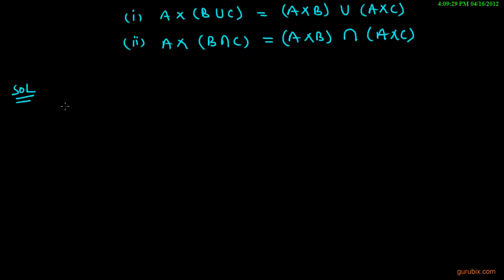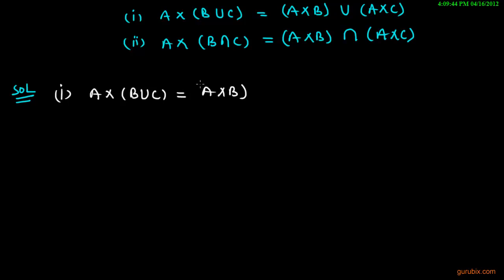First of all we shall write the first result to be proved: A cross (B union C) is equal to (A cross B) union (A cross C).